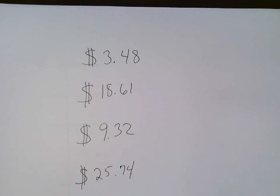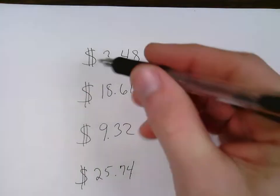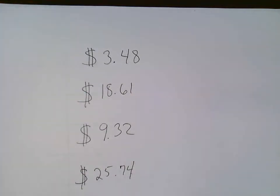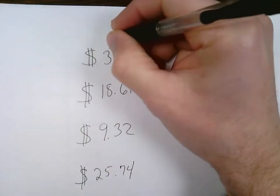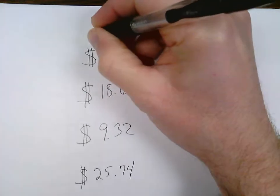We're going to round money to the nearest dollar, the nearest whole dollar. So basically I have $3.48 here. I want to figure out which whole dollar I'm closest to. So it's either going to be $3 or it's going to be $4.